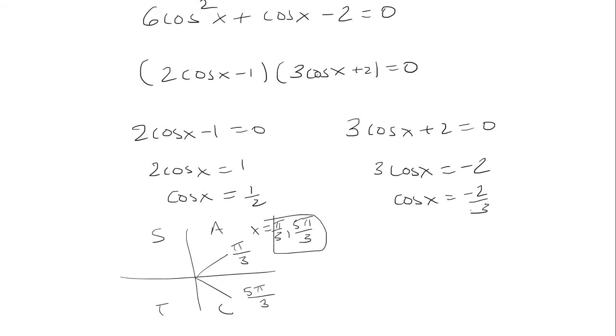Now, we're not done. We still need to do cosine equal to negative 2 thirds. So actually, before we do this, let's find the inverse cosine on both sides. So inverse cosine of negative 2 thirds. That would give us 2.301.